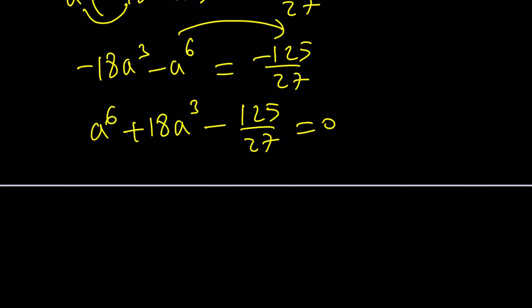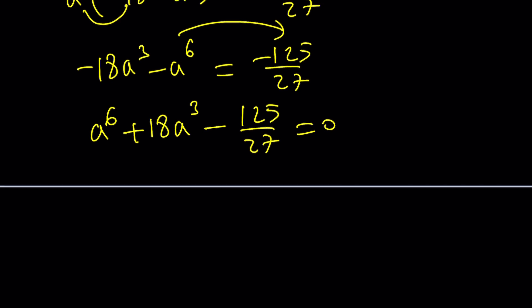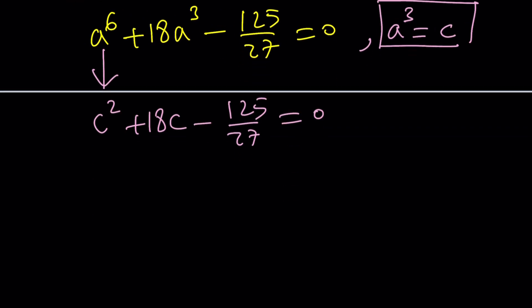Now we did get a hexic equation but that's kind of like a biquadratic or tri-quadratic. What do I mean by that? You can replace a³ with something like c and from here you get c² + 18c - 125/27 equals zero. So this is quadratic obviously but then we'll use the back substitution formula.